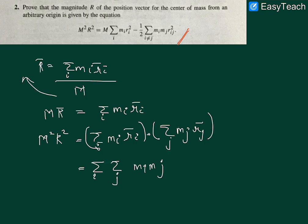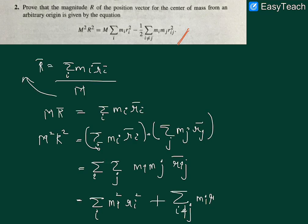The double summation is m_i m_j times r_i · r_j. Now there are two conditions: the first is when i equals j. For the general case, we have summation over i and j of m_i m_j times r_i (vector) dot r_j (vector) — note the dot product notation, not direct multiplication.